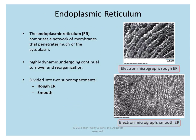The endoplasmic reticulum, also known as the ER, has two important subcomponents: the rough ER and the smooth ER. One important distinction is that the rough ER has ribosomes interacting with the membrane, whereas the smooth ER is absent of ribosomes.